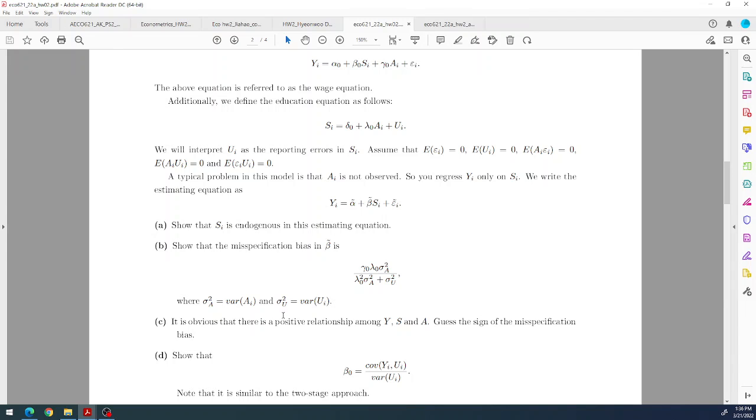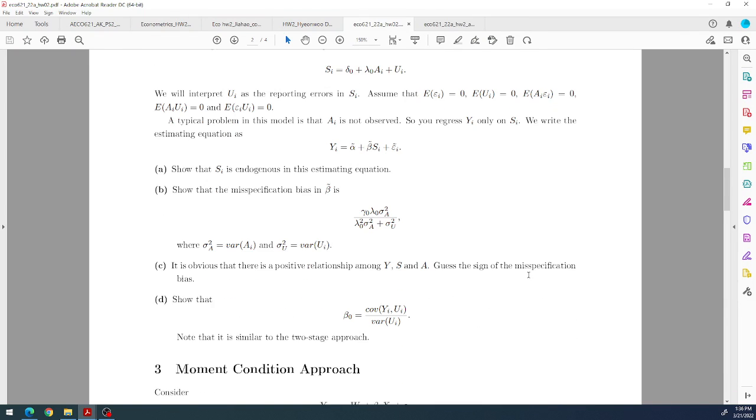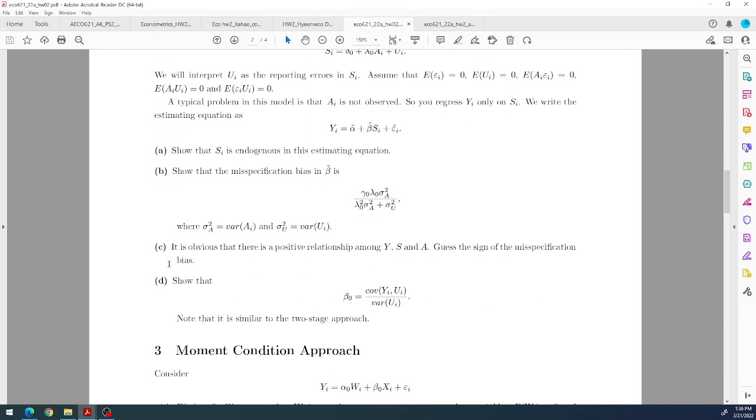The misspecification bias is simple derivation. Guessing the misspecification bias, you can tell the direction of these guys. Variance is positive. You can guess what is gamma, the sign of gamma, the sign of delta, lambda. Then you can guess the sign.